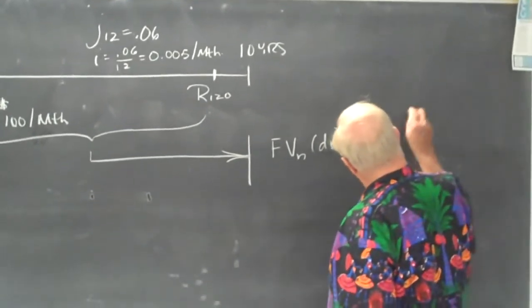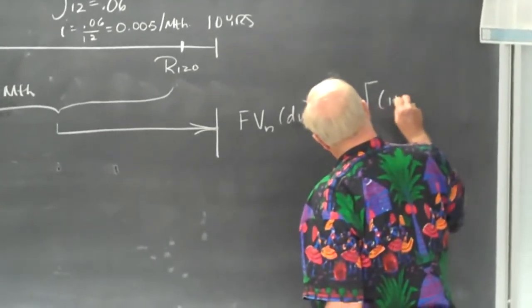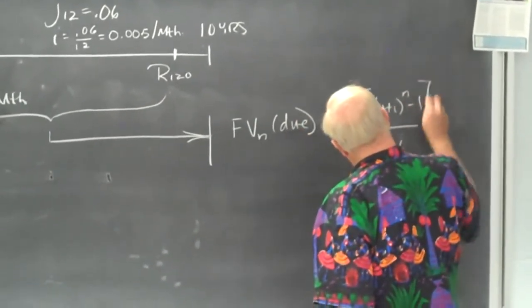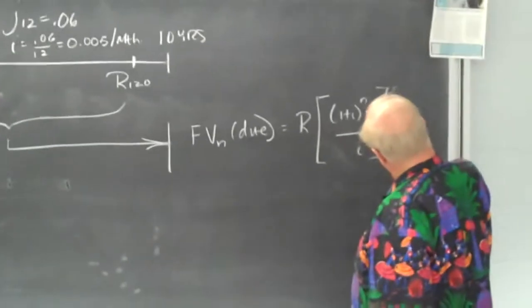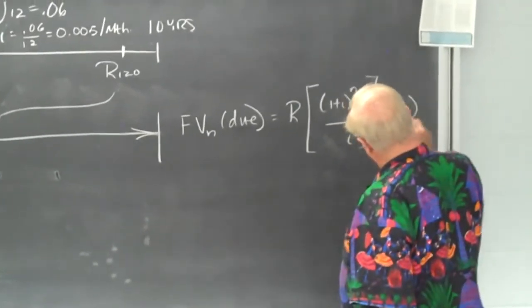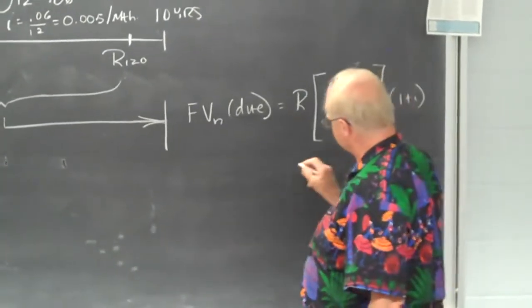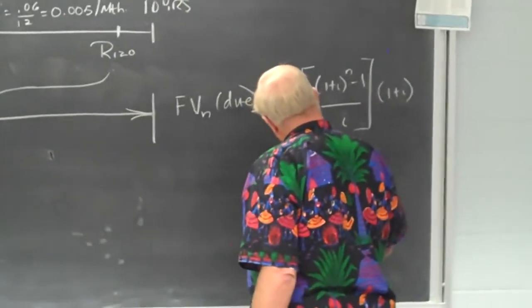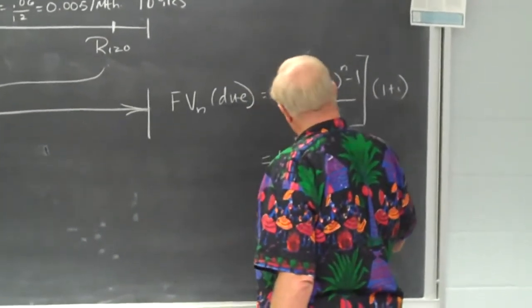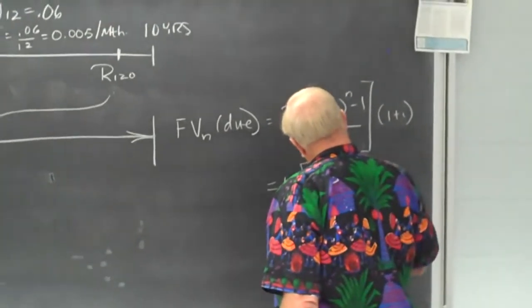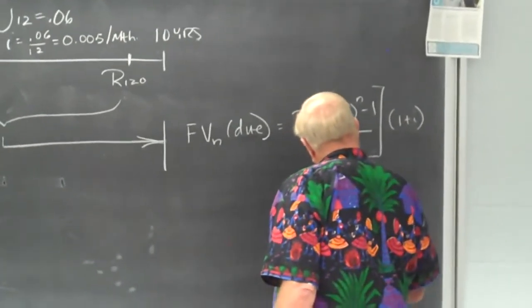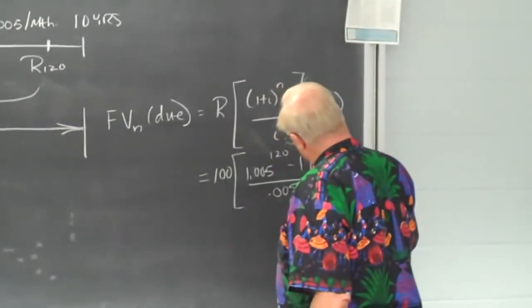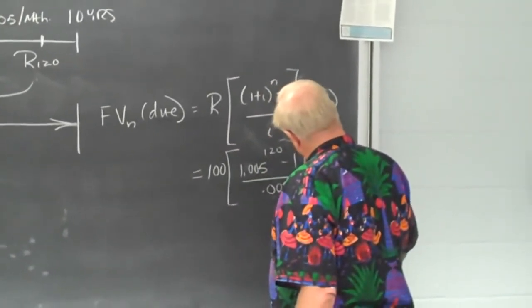So it's going to be R, or the payment, 1 plus I to the N minus 1 divided by I. And again, because it's due, we will add the 1 plus I. So we have, in this case, $100, 1.005 to the 120 minus 1 divided by 0.005. And multiply this by the 1 plus I, which is 1.005.